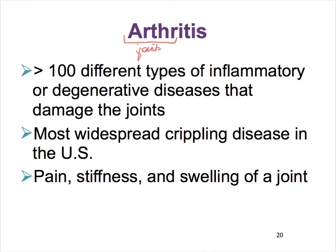Any time you see a suffix ending in '-itis,' it always refers to inflammation. This is a very common disease, and there are many different kinds of arthritis. Just because a person says 'I have arthritis' does not mean one kind—it does typically refer to the most common kind, called osteoarthritis. In general, this joint disease leads to pain, often along with stiffness and swelling.